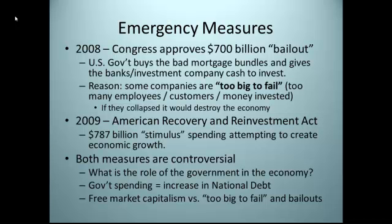Let's talk about what the government did after the crash in 2008. Congress approved a $700 billion bailout in order to try to revive the United States economy. The U.S. government decided to spend $700 billion to buy all of these bad loans and replace those lost gambles by investors with cash, hoping these companies would use it to revive the economy, invest again, and basically try to fix things. The reason for this was that the United States government said some companies are too big to fail — they have too many employees, too many customers, and too much money invested that if they were allowed to collapse, it would destroy the economy and maybe send the country into an economic crisis like the Great Depression.